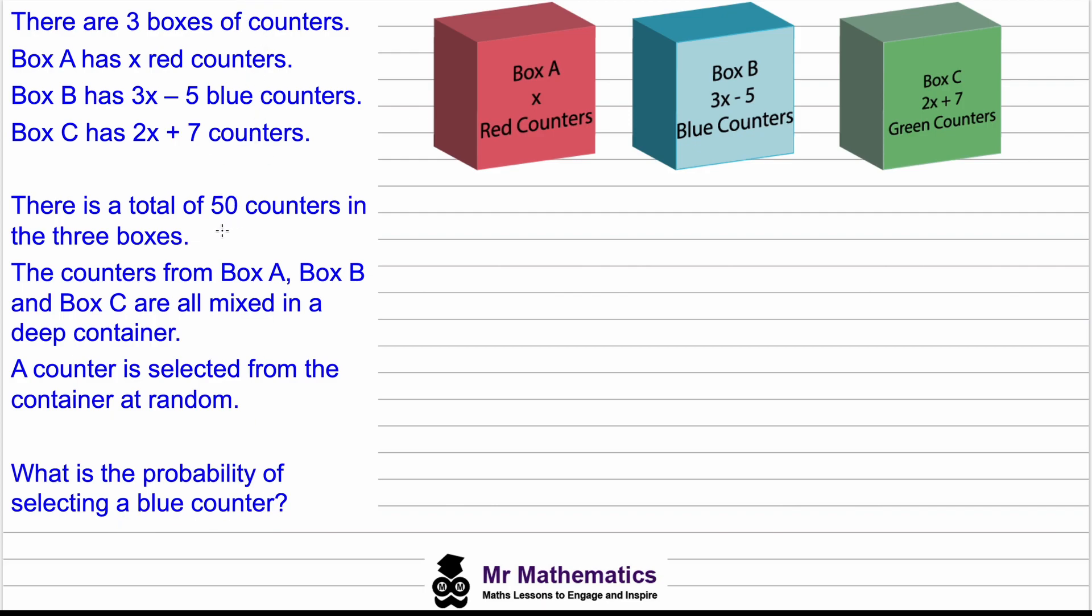If there's a total of 50 counters in all three boxes, we can add up the number of counters in each. So the total, which is 50, equals the counters in the red box plus the counters in the blue box plus the counters in the green box.